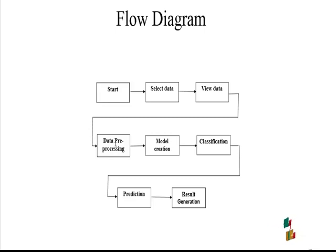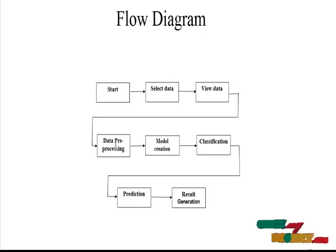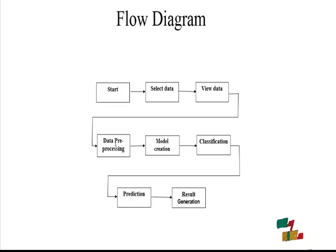Looking at the flow diagram: first, start and select the dataset — we use three datasets. We view the dataset, then perform data pre-processing by resizing images, for example to 224x224 or 250x250 pixels, setting the width and height. Then model creation is performed, applying a CNN or deep CNN algorithm.